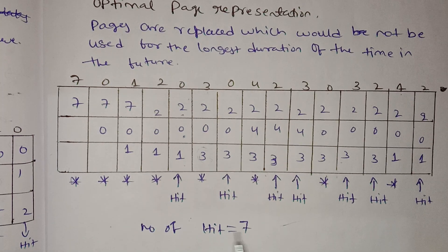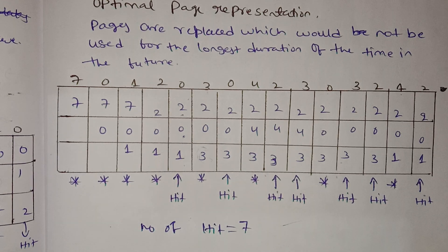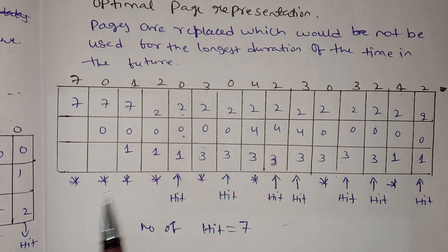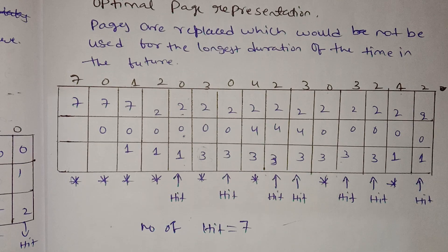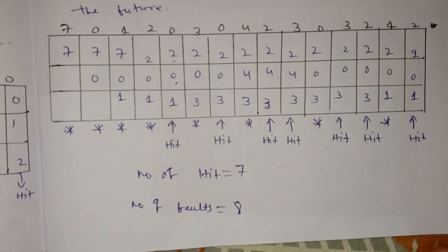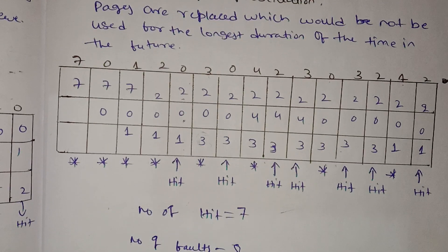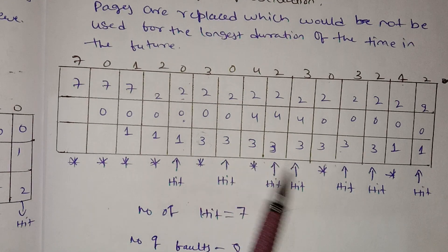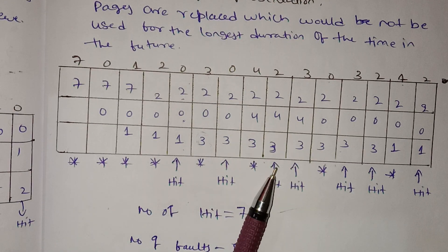The number of hits is 7 and the number of page faults is 8 for the Optimal algorithm. Please like, share, subscribe. Thank you.